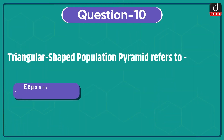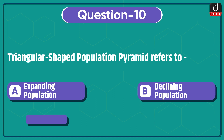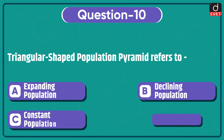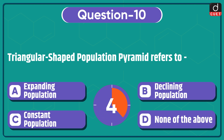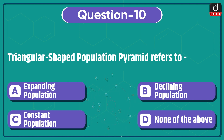Last question: a triangular-shaped population pyramid refers to — expanding population, declining population, constant population, or none of the above? The correct answer is option A, expanding population.